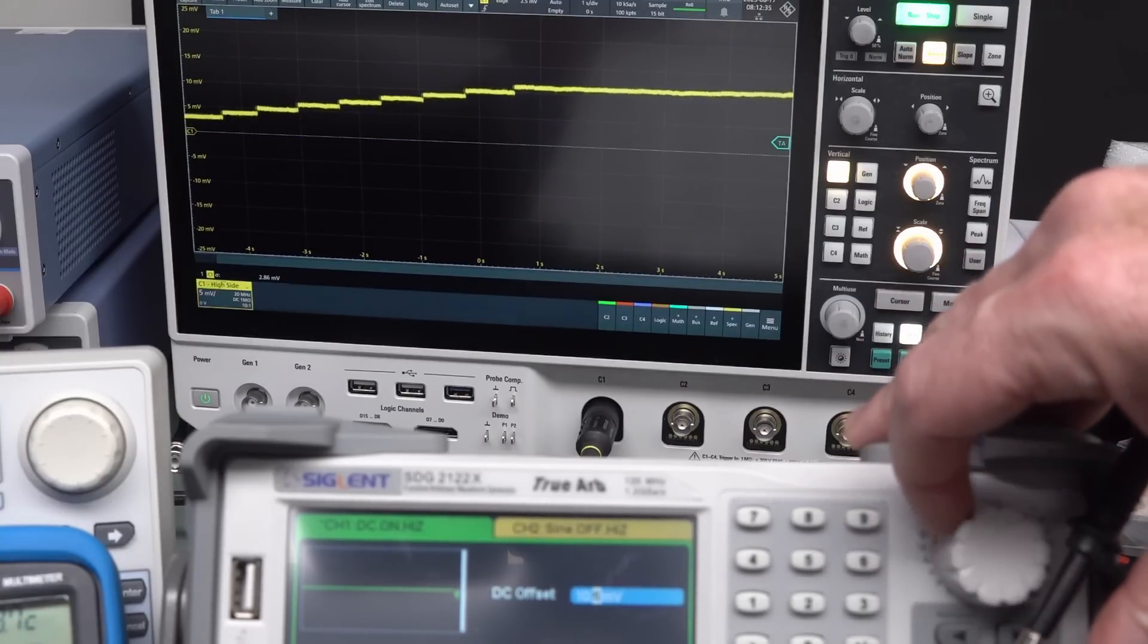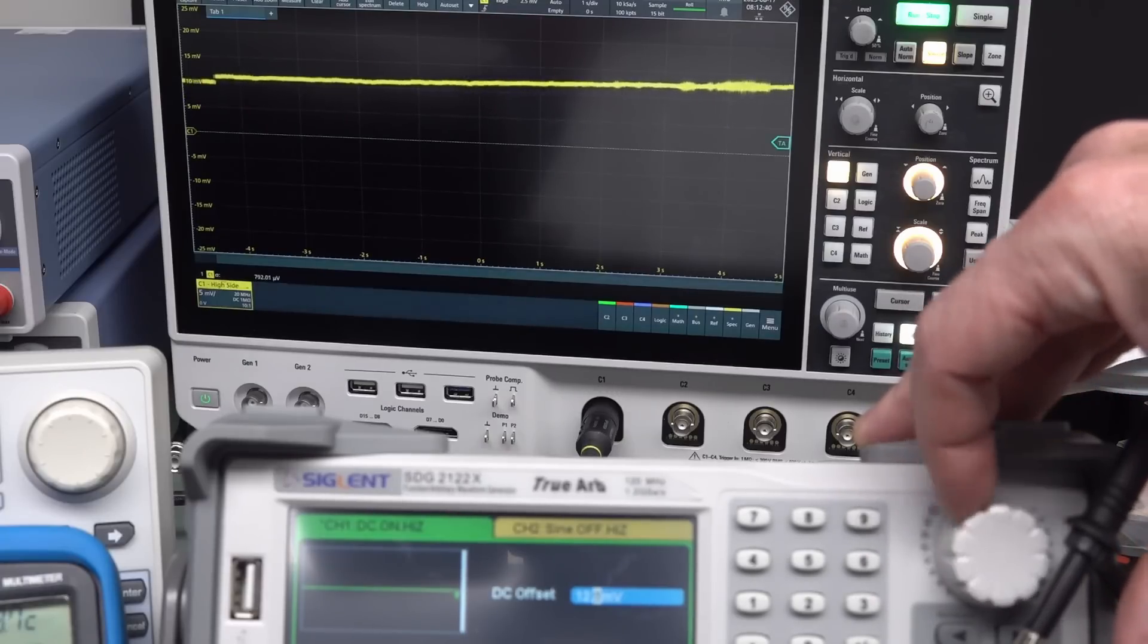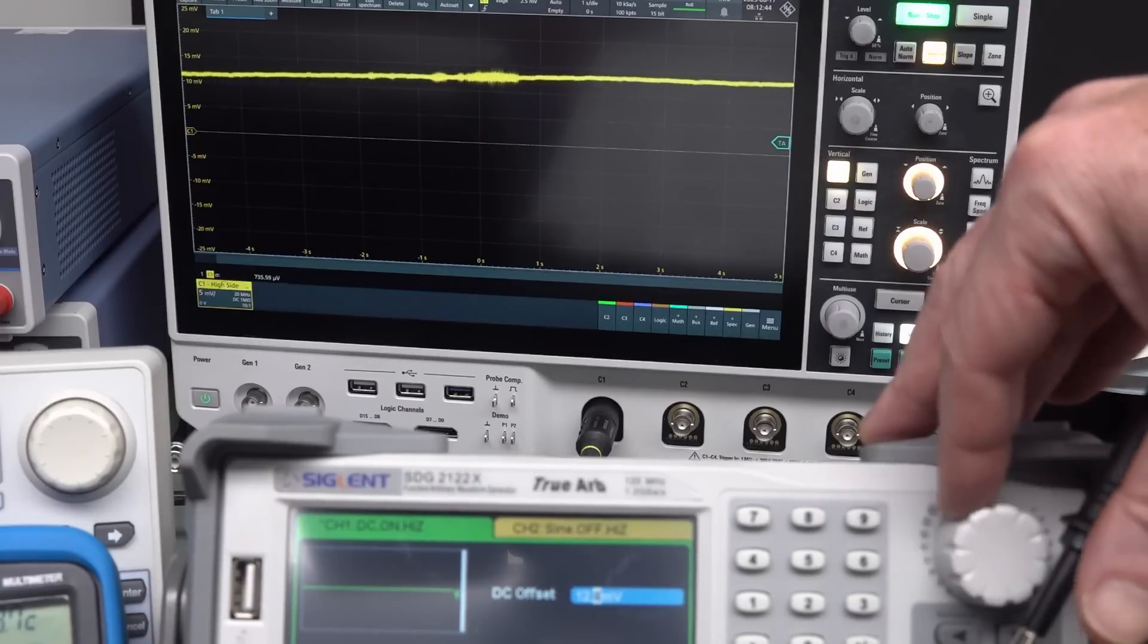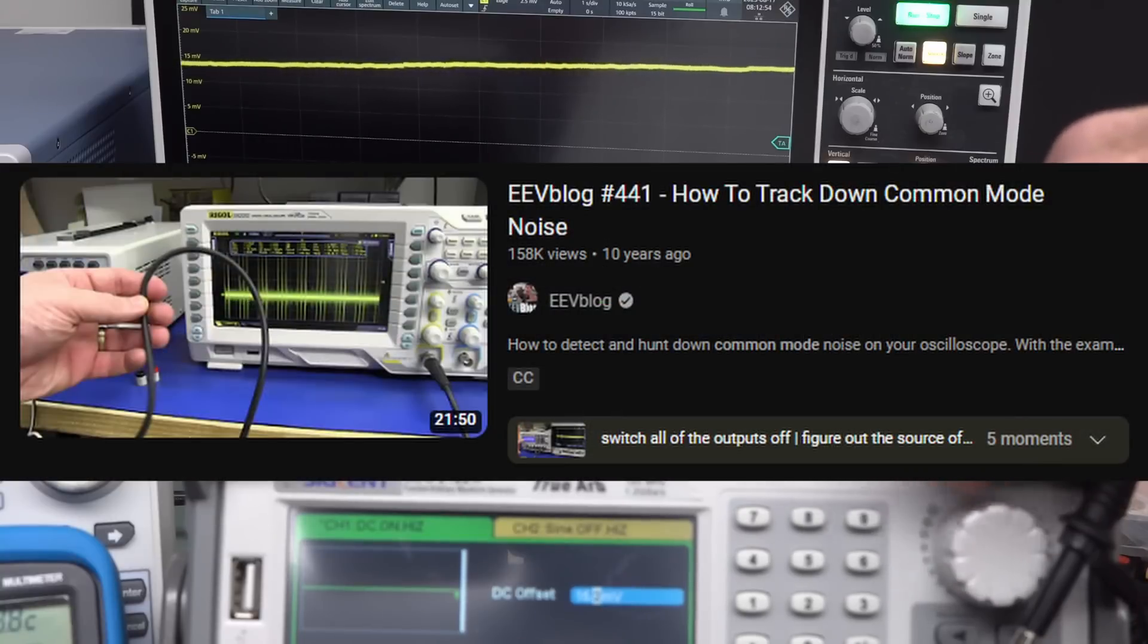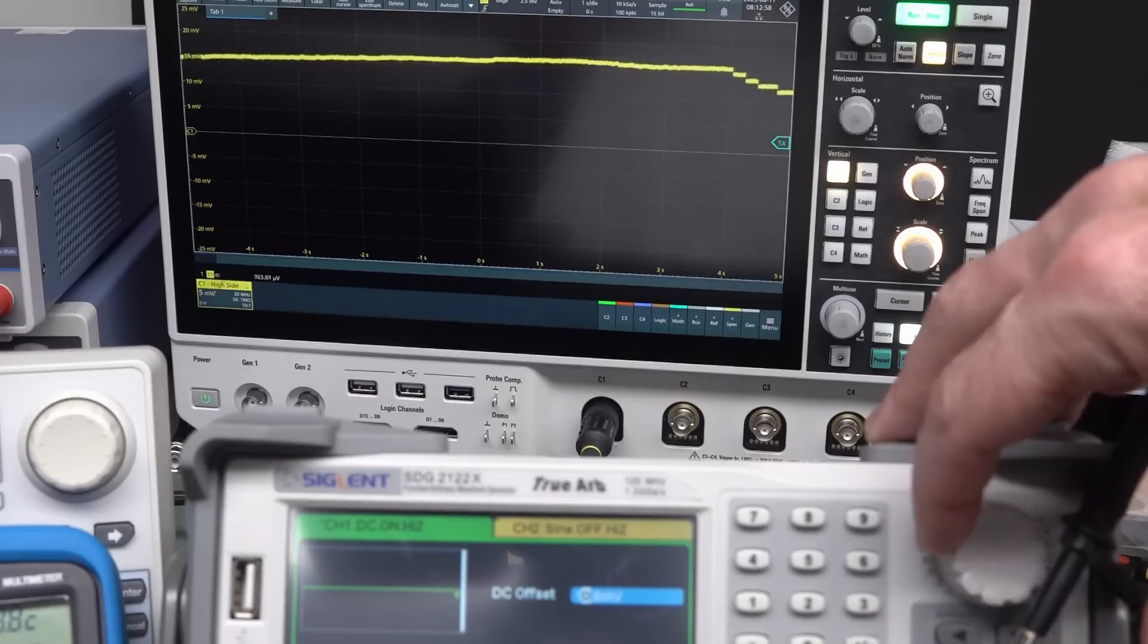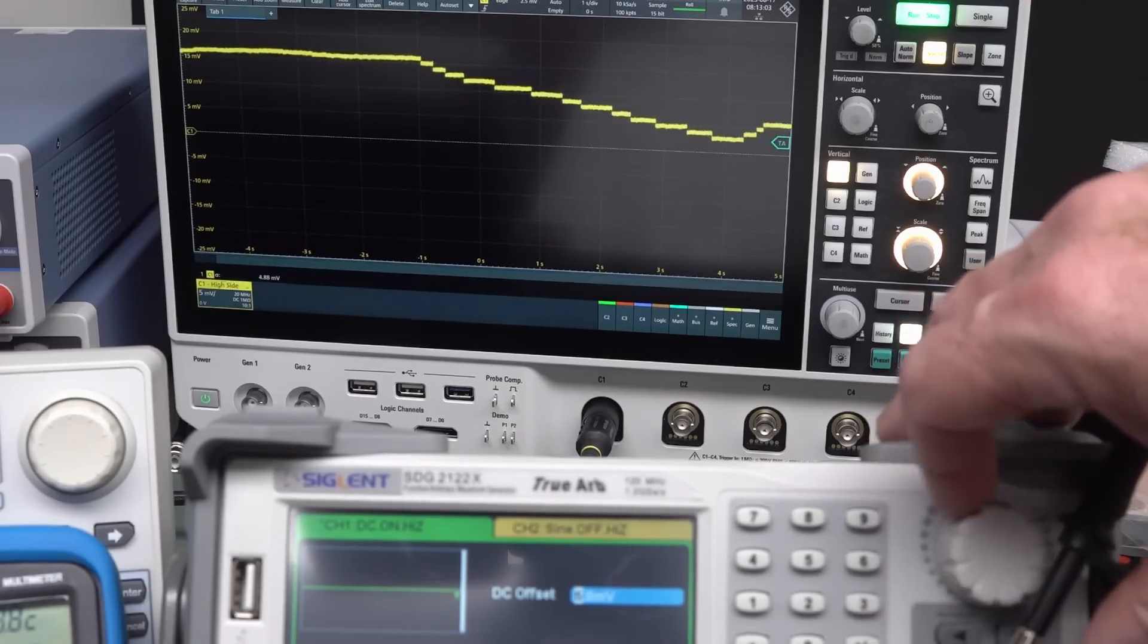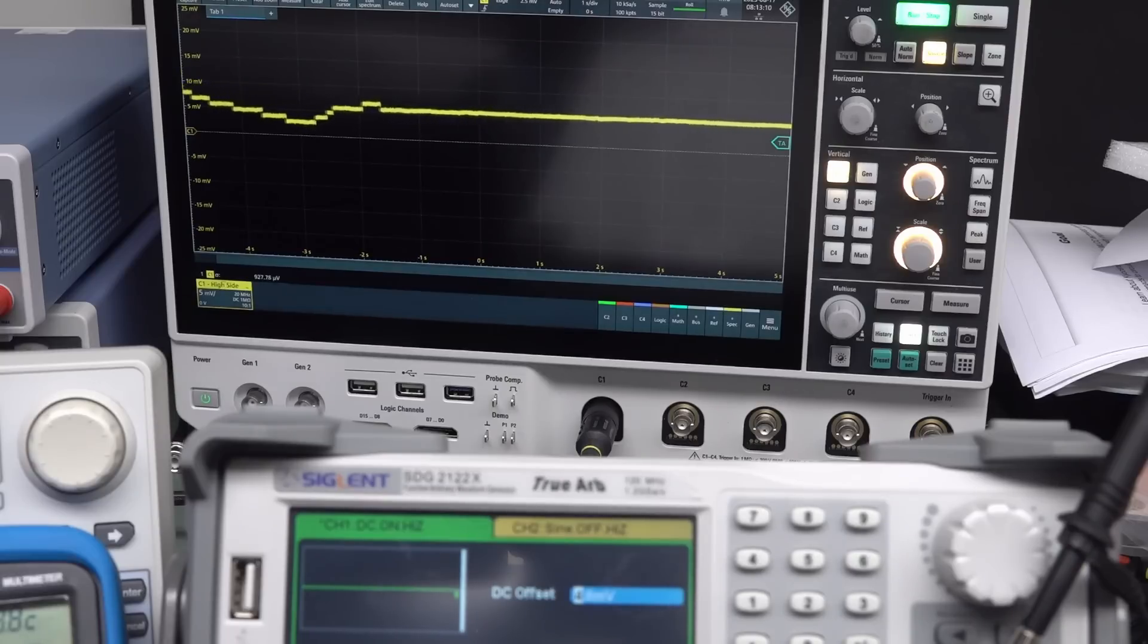But we can actually do 0.1 millivolt steps there and look, you'll see that you can hardly see that change, but I'm actually adjusting that, doing minor little changes there. Those bursts are coming externally, don't worry, it's not actually coming from the gen. There's all sorts of things happening around me. I've done videos on common mode interference and stuff like that. But there you go, you can actually adjust in 0.1 millivolt or 1 millivolt steps, way better than your power supply. So that could come in real handy for all sorts of projects that you might need a nice finely adjustable DC voltage.